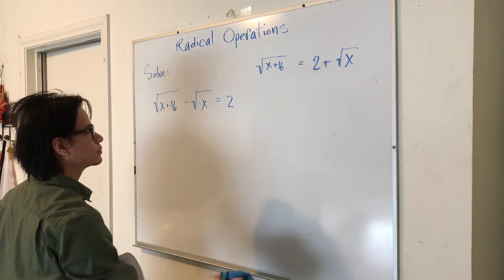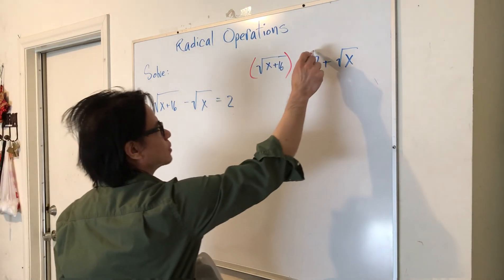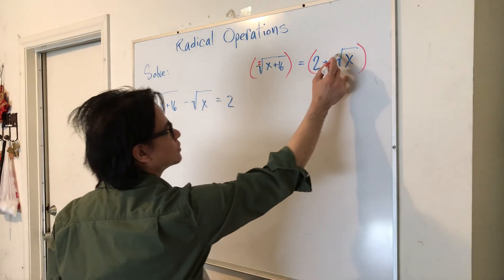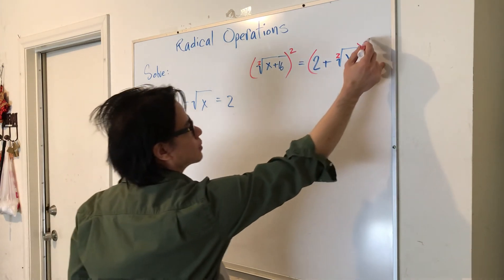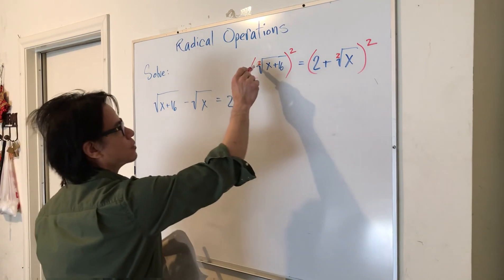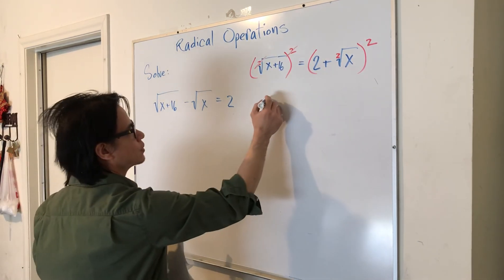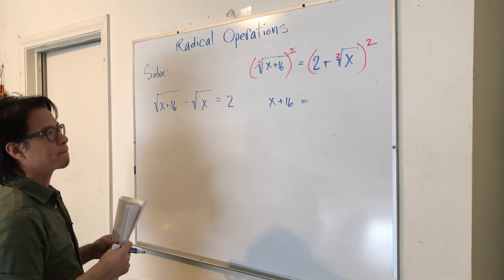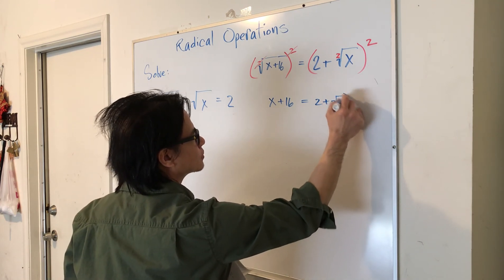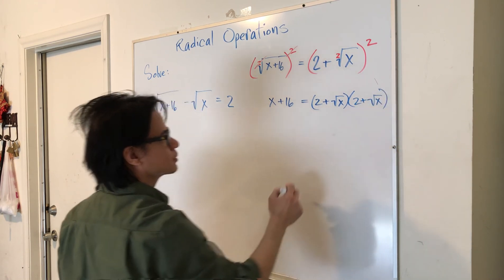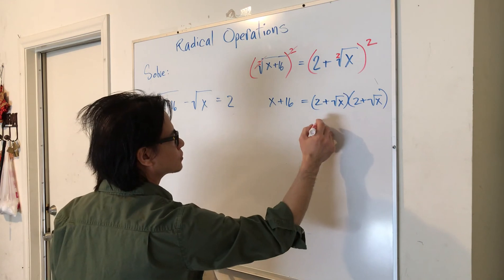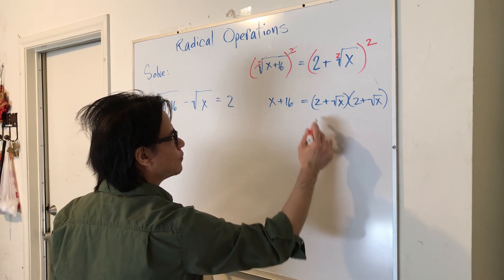So let's ask ourselves what would be our exponent here in order to get rid of the radical. Remember we said there's a little 2 here that is invisible so we're going to multiply, or I'm going to take both sides to the exponent of 2, to the power of 2. This cancels out, you have no radical, you have X plus 16 equals, now for this guy here it's the same as 2 plus root X times 2 plus root X. So if you see foiling action here you are correct, so you need to foil this, meaning...